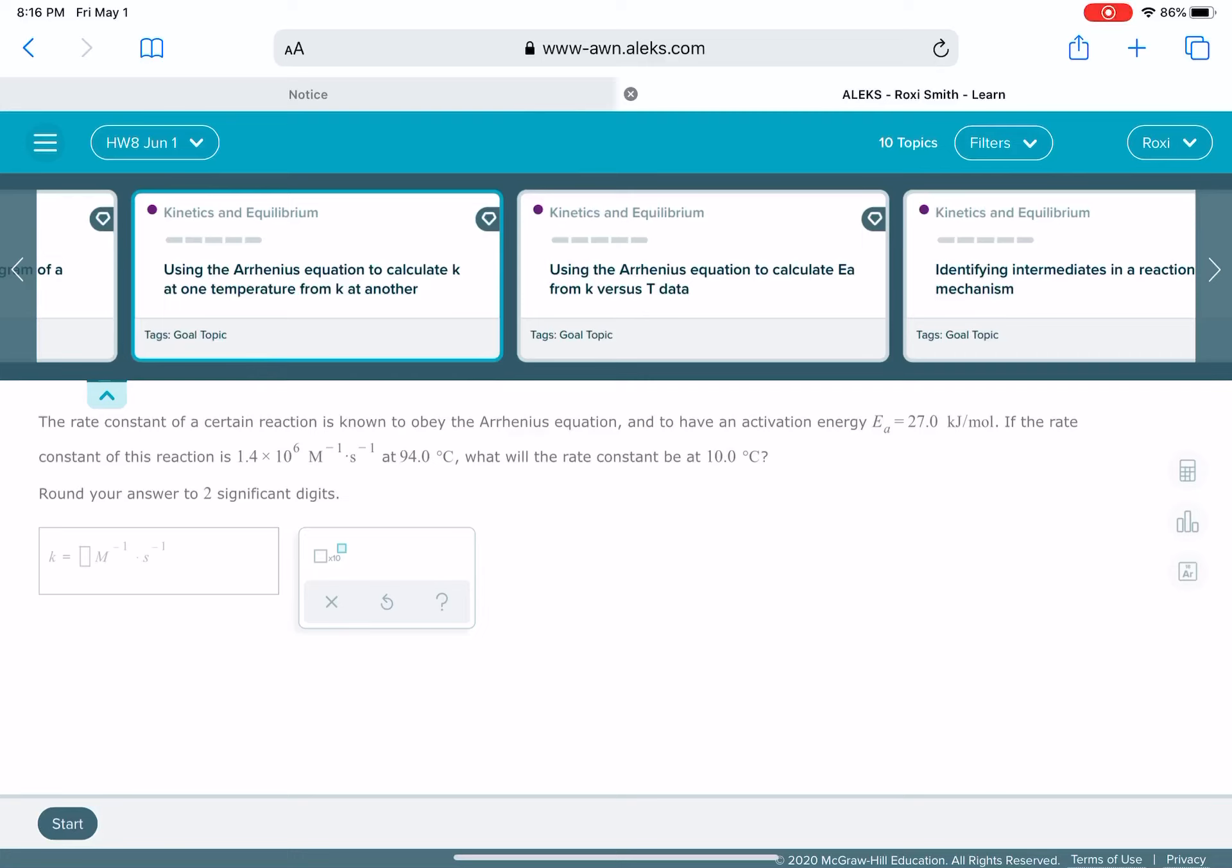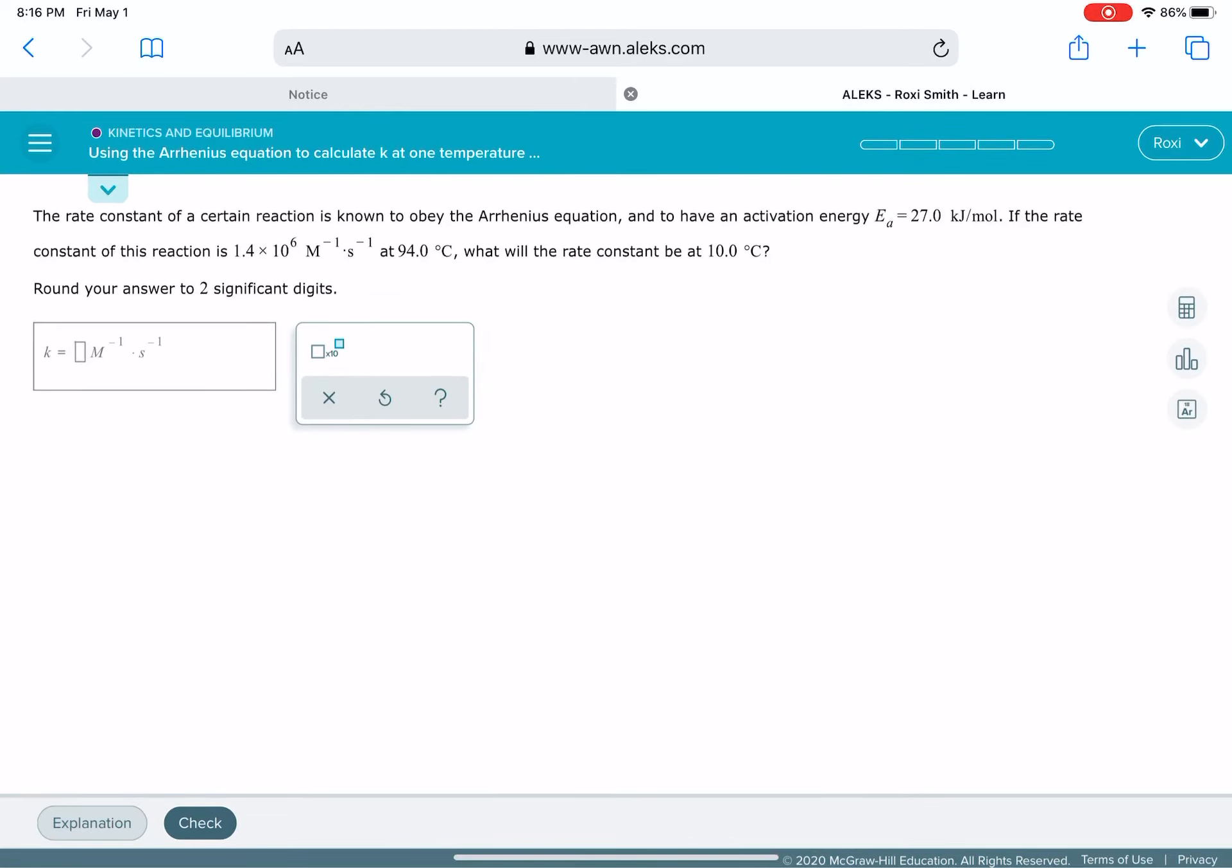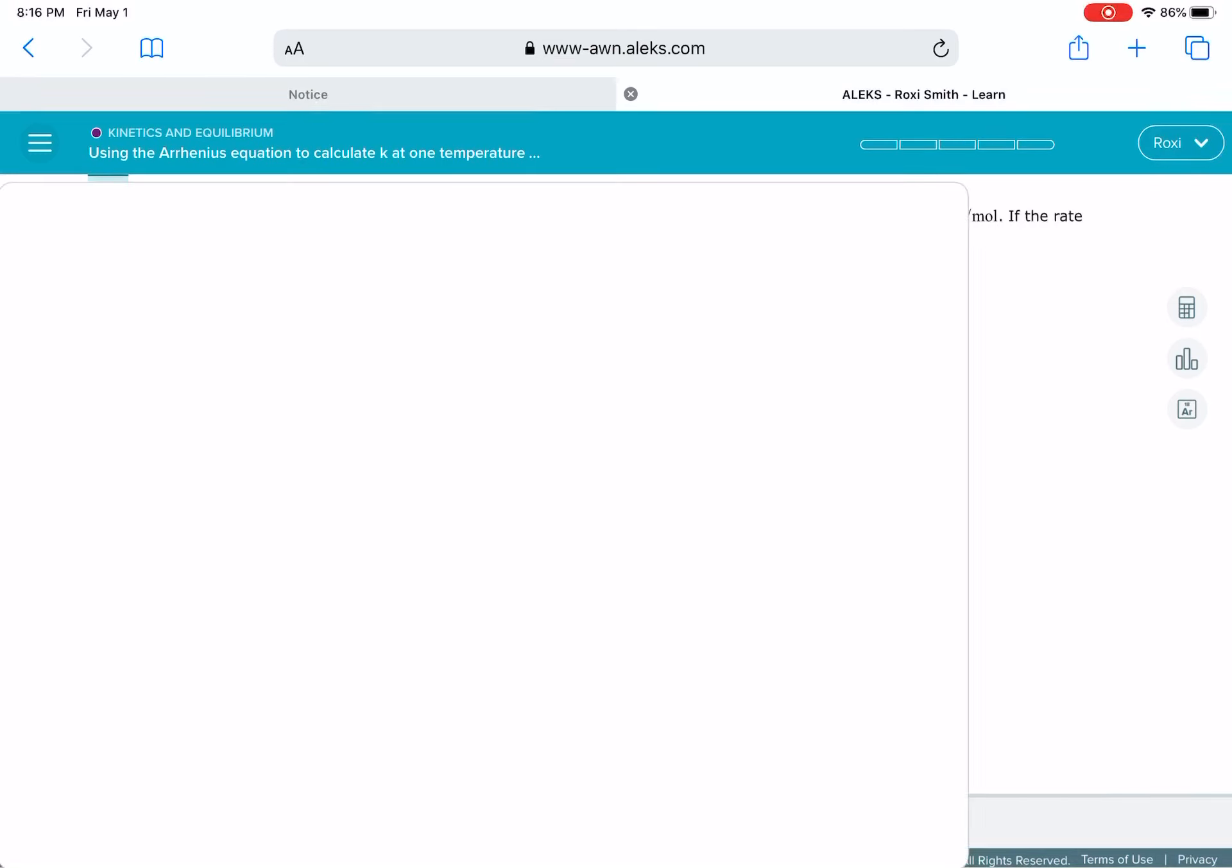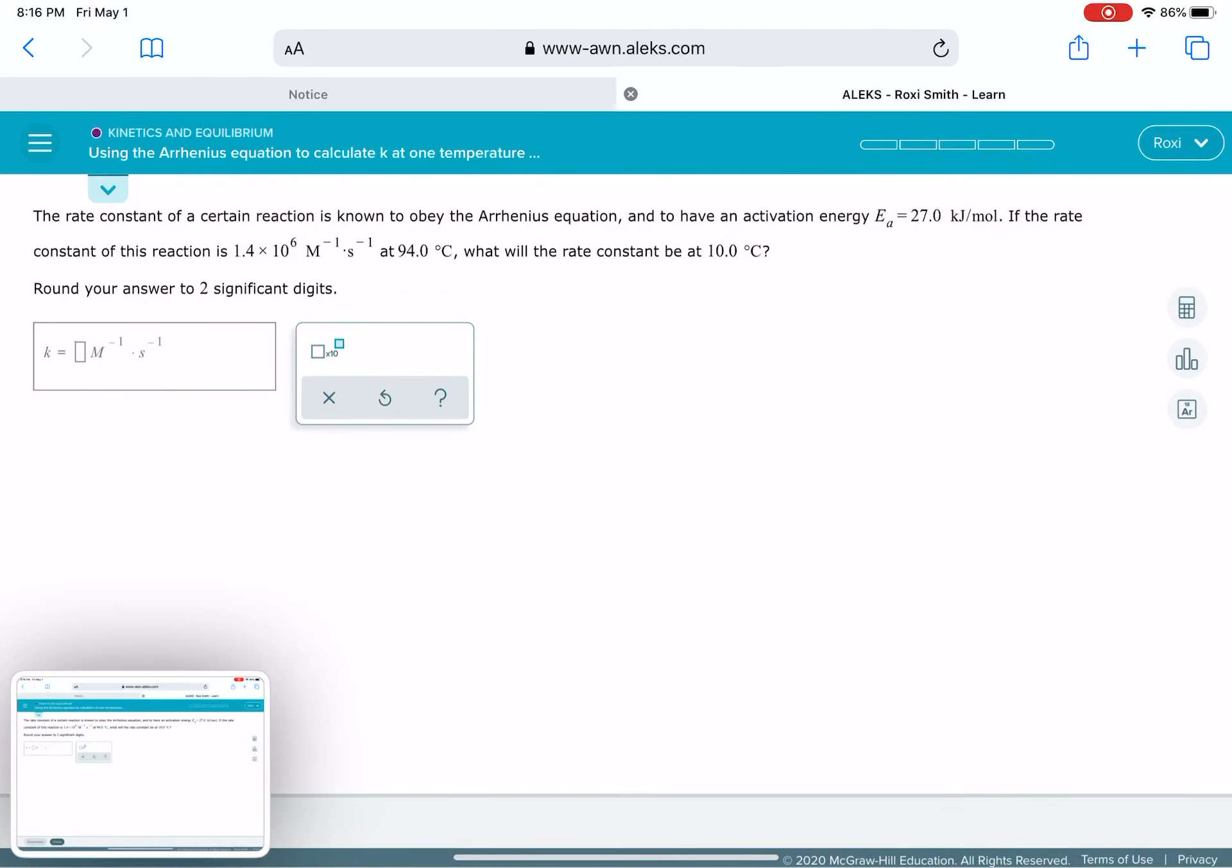The next problem that you're ready for in homework 8 is using the Arrhenius equation to calculate K at one temperature from K at another temperature. This problem is going to have us use the equation where we combine two Arrhenius equations into one.